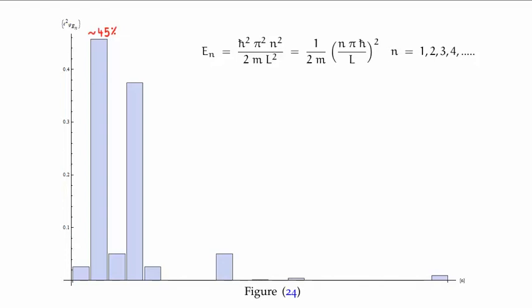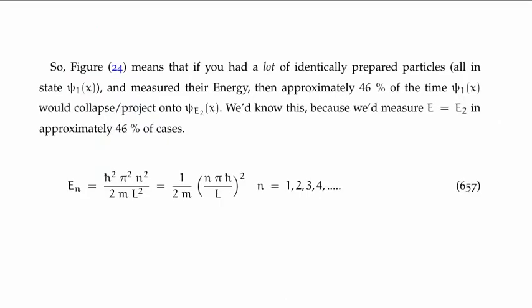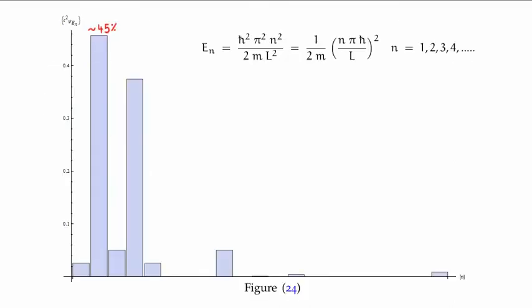What does this mean? This means that if you had a lot of identically prepared particles all in the psi sub one wave function, and you measured their energy using the Hamiltonian or the energy eigenvalue equation, approximately 45 to 46 percent of the time psi sub one would collapse into the n=2 or psi sub e sub 2 wave function. The way we know this is because the energy calculated corresponds to n=2. This should make sense because in the power series expansion I took a coefficient of 21 on the n=2 basis state.